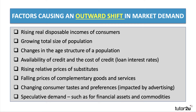Market demand can also be boosted by an increase in the size of a population — demand for housing, healthcare, and education, for example, is linked to population size, which may itself be affected by rates of net migration. Changes in the age structure of the population can have quite a big effect; as the population ages, there are often important changes in the pattern of market demand, including for social care, healthcare, sheltered housing, and holidays.